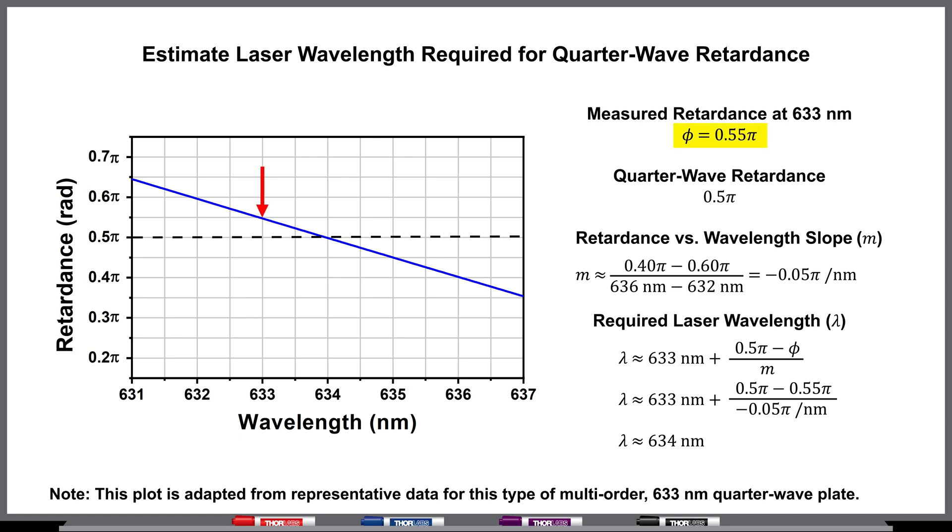In our case, the retardance was a bit too high at 633 nanometers, so we could look at a typical wavelength versus retardance plot and adjust accordingly. We know for a true quarter wave, we would see the power remain constant while the polarizers are crossed or parallel. We can then continue to tune the wavelength of your source until the power remains constant as we rotate the analyzing polarizer.